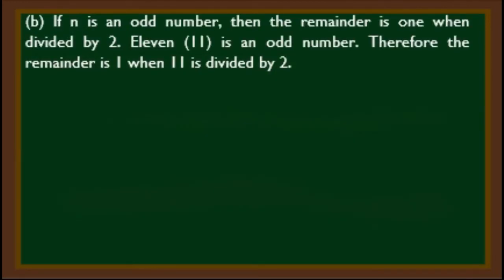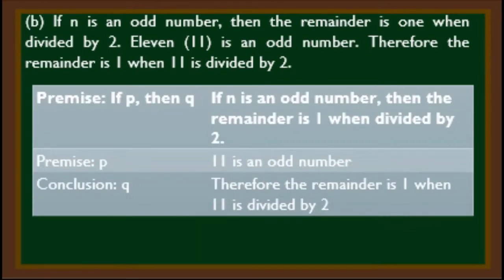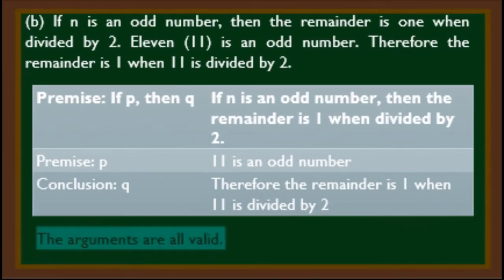Next example: if N is an odd number, then the remainder is 1 when divided by 2. 11 is an odd number. Therefore, the remainder is 1 when 11 is divided by 2. Premise P: 11 is an odd number. Conclusion Q: the remainder is 1 when 11 is divided by 2. The arguments are all valid.